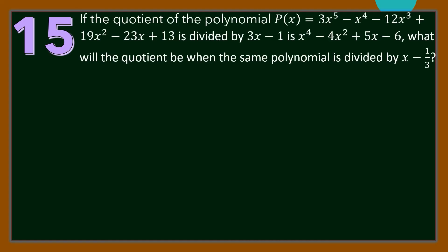Number 15. If the quotient when the polynomial P(x) = 3x⁵ − x⁴ − 12x³ + 19x² − 23x + 13 is divided by (3x − 1) is x⁴ − 4x² + 5x − 6, what will the quotient be when the same polynomial is divided by x − 1/3? For our suggested solution, we will just use the given information.